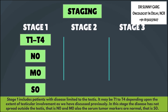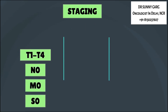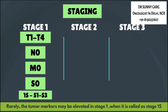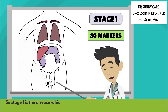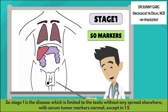In Stage 1, the disease has not spread outside the testes — that is, it is N0 and M0. The serum tumour markers are normal, that is S0. Rarely, the tumour markers may be elevated in Stage 1, in which case it is called Stage 1S. So Stage 1 is disease limited to the testes without any spread elsewhere, with serum tumour markers normal, except in 1S.